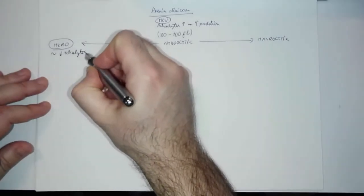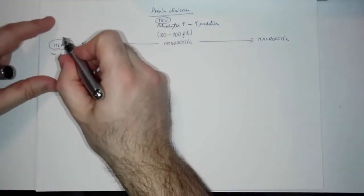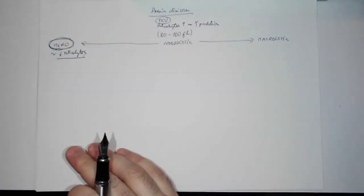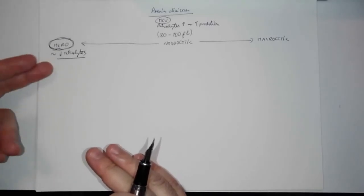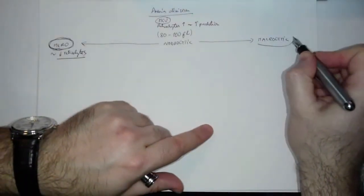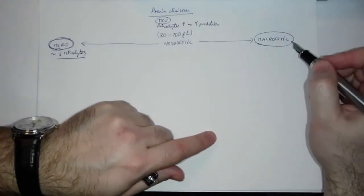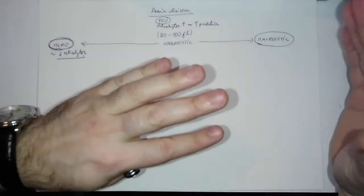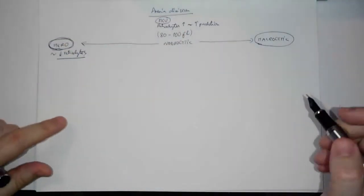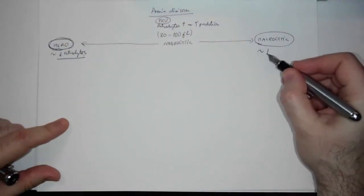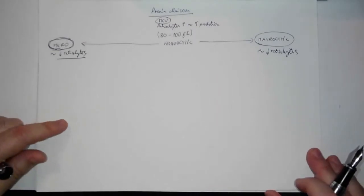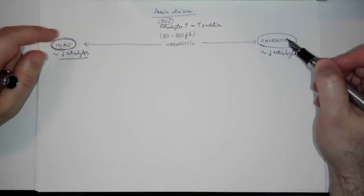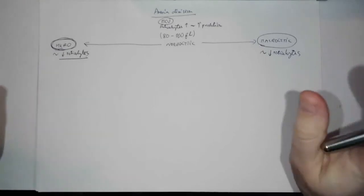In microcytic anemia, the problem is mainly with hemoglobin synthesis — the problem is on the side of hemoglobin. Reticulocyte production will also be decreased. In macrocytic anemia, the problem is with DNA production, but overall production is also decreased, so reticulocyte count is decreased too. In these two extreme cases — microcytic below 80 fL and macrocytic above 100 fL — we care more about the mean corpuscular volume.